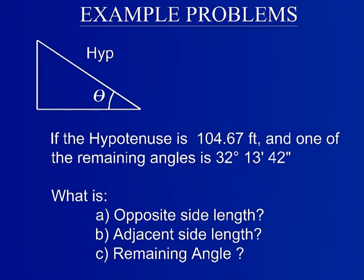In order to demonstrate the application of some of these functions, let's do an example problem. Given a right triangle with a hypotenuse of 104.67 feet and an angle theta of 32 degrees, 13 minutes, and 42 seconds, what is the opposite side length, the adjacent side length, and the remaining angle of this triangle?